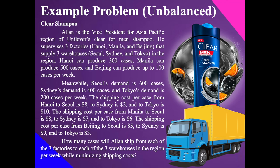Alan is the Vice President for Asia Pacific Region of Unilever's Clear for Men Shampoo. He supervises three factories: Hanoi, Manila, and Beijing, that supply three warehouses: Seoul, Sydney, and Tokyo. Hanoi can produce 300 cases, Manila can produce 500 cases, and Beijing can produce up to 100 cases per week. Seoul's demand is 600 cases, Sydney's demand is 400 cases, and Tokyo's demand is 200 cases per week. Shipping cost per case: Hanoi to Seoul $8, to Sydney $2, to Tokyo $10; Manila to Seoul $4, to Sydney $7, to Tokyo $6; Beijing to Seoul $5, to Sydney $9, to Tokyo $3.